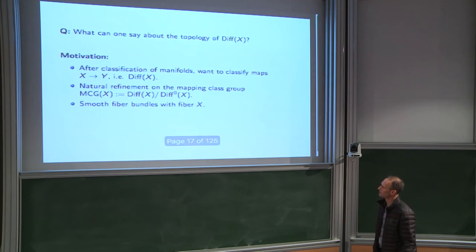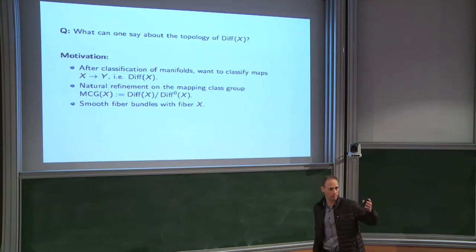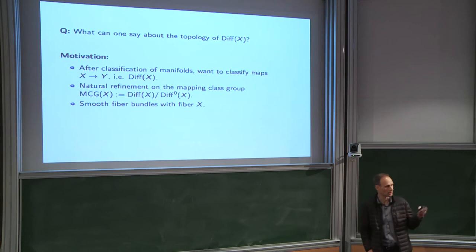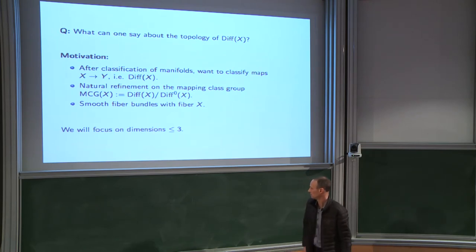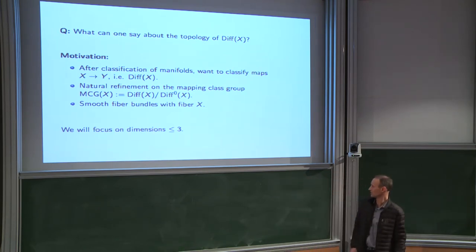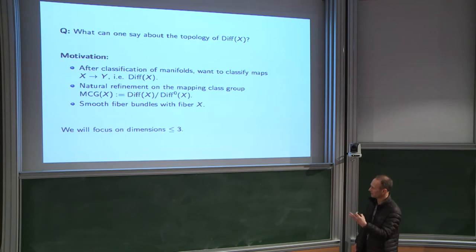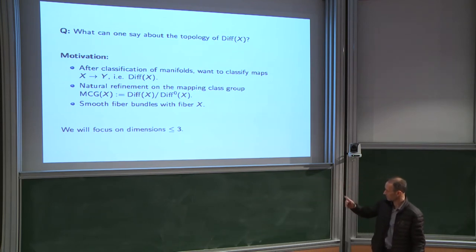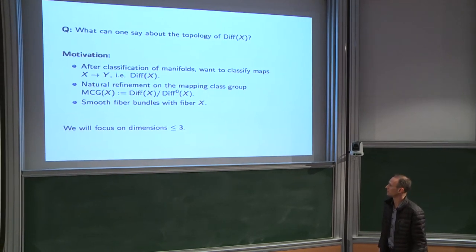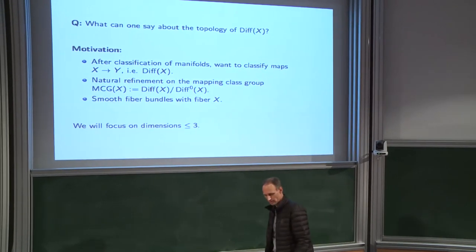The talk is going to focus on dimensions less than or equal to 3. In higher dimensions, compared to the low-dimensional case, very little is known, and what is known is mainly asymptotic. I'm going to be focusing almost entirely on dimension 3, after some initial comments about the lower-dimensional case.